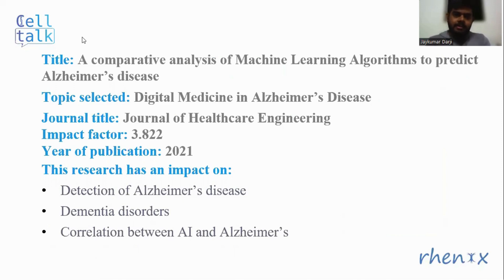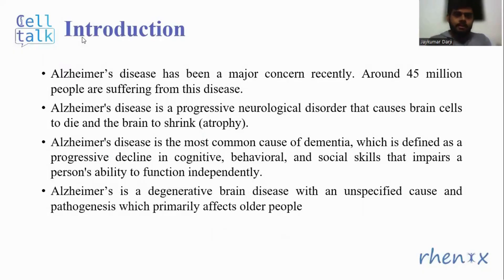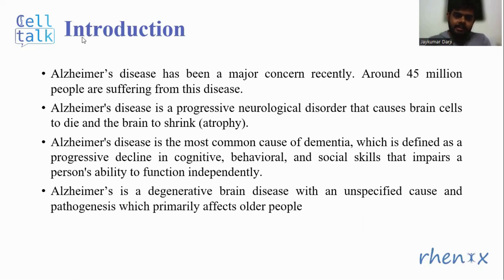This research has an impact on detection of Alzheimer's disease, dementia disorders, and the correlation between artificial intelligence and Alzheimer's. To start with the introduction: Alzheimer's disease has been a major concern recently, with around 45 million people suffering from this disease. It is a progressive neurological disorder that causes brain cells to die and the brain to shrink. Alzheimer's disease is the most common cause of dementia, defined as a progressive decline in cognitive, behavioral, and social skills that impairs a person's ability to function independently. It is a degenerative brain disease with an unspecified cause and pathogenesis, which primarily affects older people.